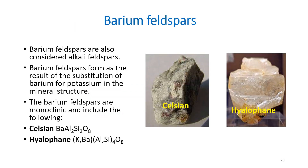Barium feldspars are also considered as alkali feldspars. They form as a result of substitution of barium for potassium in the mineral structure. Barium feldspars are monoclinic and include celsian, with composition BaAl₂Si₂O₈, and hyalophane, which contains both potassium and barium aluminosilicate.